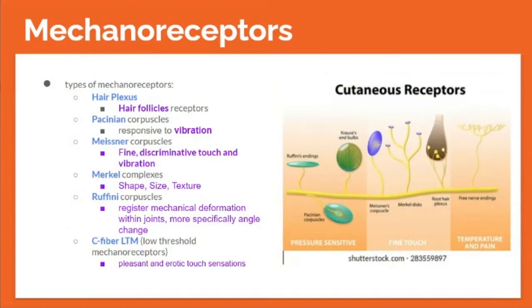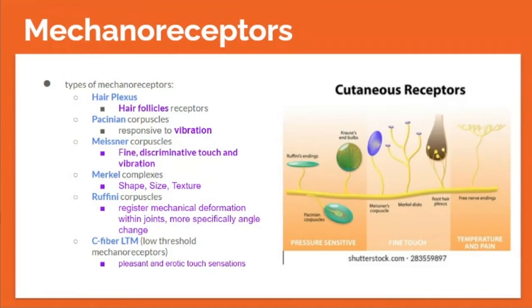For mechanoreceptors, there are six types: hair plexus or hair follicle receptors; Pacinian corpuscles, responsive to vibration; Meissner corpuscles, responsive to fine discriminative touch and vibration; Merkel complexes, which detect shape, size, and texture; Ruffini corpuscles, which register mechanical deformation within joints, specifically angle change; and C-fiber low threshold mechanoreceptors (LTMs), which detect pleasant and erotic touch sensations.